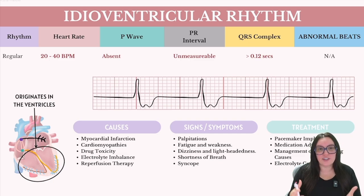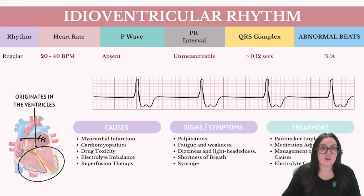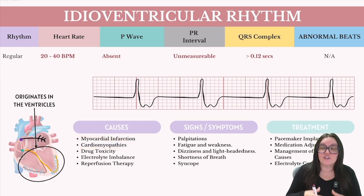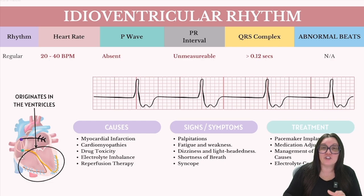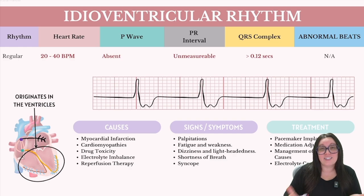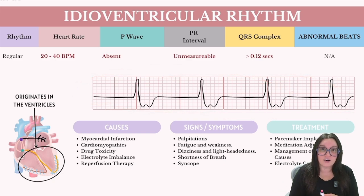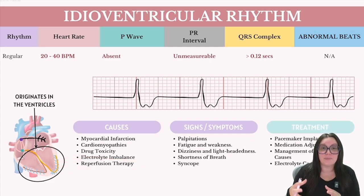Idioventricular rhythms can occur due to several serious conditions. One is a myocardial infarction, especially when the damage impacts the heart's normal conduction system pathways. Next, we have cardiomyopathies — diseases of the heart muscle that impair its electrical conductivity. Drug toxicity can also depress the normal function of our SA and AV nodes. Electrolyte imbalances, especially with potassium, calcium, and magnesium, can affect cardiac conduction. And lastly, reperfusion therapy — occasionally seen after reopening of a previously blocked blood vessel following a post-myocardial infarction or other causes.